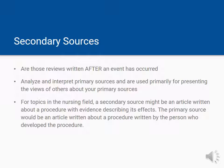Secondary sources are those articles that describe, discuss, interpret, comment upon, analyze, evaluate, summarize, and process primary sources. Secondary source materials can be articles in newspapers or popular magazines, book or movie reviews, or articles found in scholarly journals that discuss or evaluate someone else's original research.